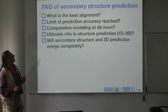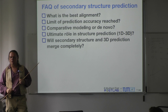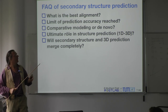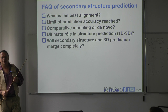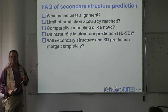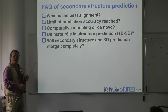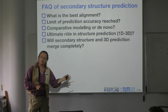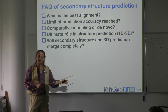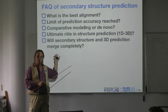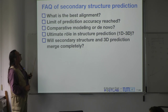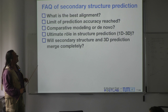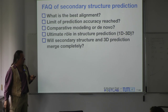Let's look at a couple of key questions about secondary structure prediction: If alignment is important, what's the best alignment to use? Is the limit of performance reached? If we looked at comparative modeling — is that actually doing better? And ultimately, will secondary structure prediction methods and 3D structure prediction merge?